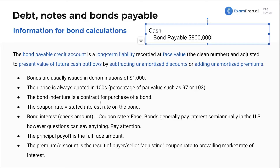Bond indenture is a contract for the purchase of the bond — that's the agreement. The coupon rate is the stated rate. I'm really doing my best to drill this in your mind, because all of this is critically important to understand bonds before we even dive in. Bond interest is the coupon rate times the face value — this is what you're actually paying.